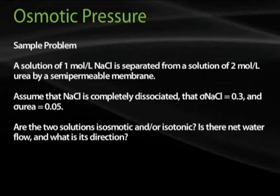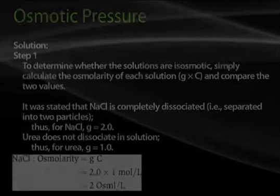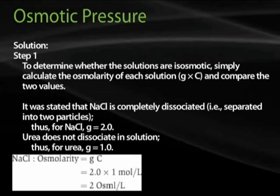Sample problem: A solution of 1 mole per liter sodium chloride is separated from a solution of 2 moles per liter urea by a semi-permeable membrane. Assume that sodium chloride is completely dissociated, sigma for sodium chloride is 0.3, and sigma for urea is 0.05. Are the two solutions iso-osmotic and/or isotonic? Is there net water flow, and what is its direction? Step 1: to determine whether the solutions are iso-osmotic, calculate the osmolarity of each solution (G times C) and compare the two values.